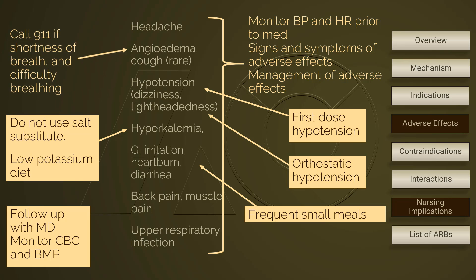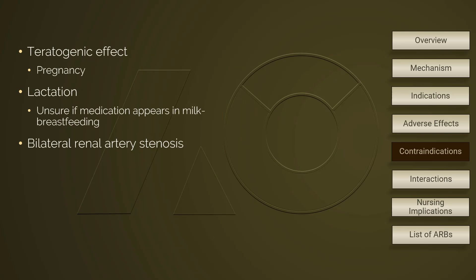Patients should be taught to call 911 if experiencing chest pain, shortness of breath, and difficulty breathing, as these are symptoms of angioedema and severe cardiac problems. The contraindications are about the same as those of ACE inhibitors. ARBs can cause defects in the developing fetus; therefore, they are contraindicated during pregnancy. In addition, it is unknown if ARBs are excreted into breast milk, so breastfeeding is contraindicated for patients using ARBs. Another contraindication for ARBs is bilateral renal artery stenosis.